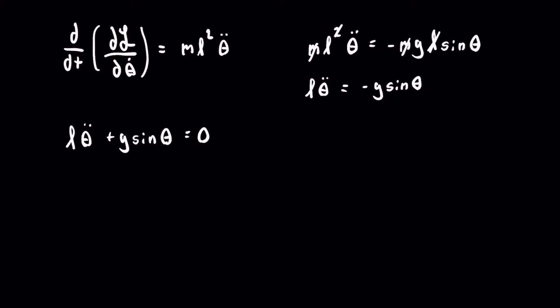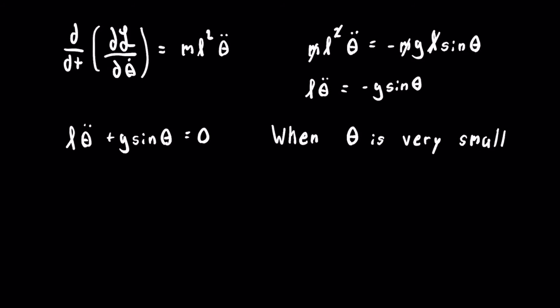The problem with this differential equation is that it's very difficult to solve, so what we do is make a small angle approximation. When theta is very small and measured in radians, theta will be approximately equal to sine of theta. Making this replacement into our differential equation gives us l theta double dot plus g theta equals zero.